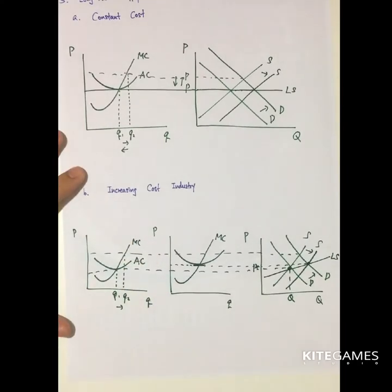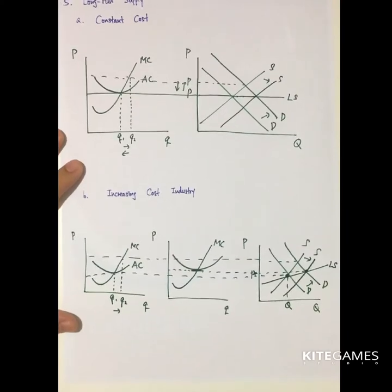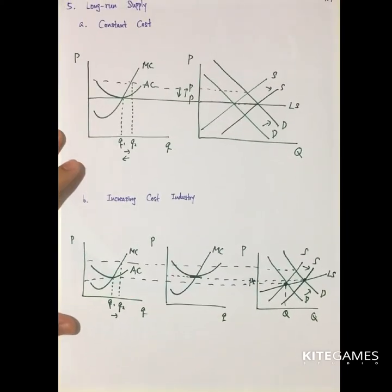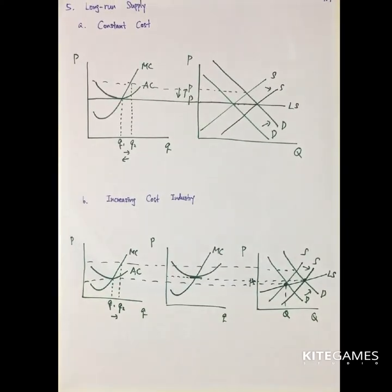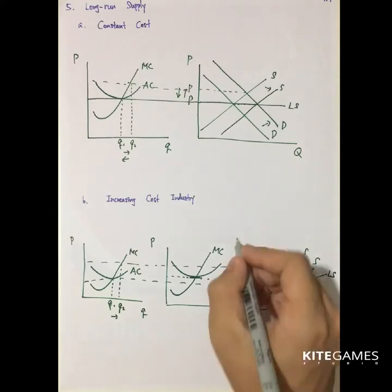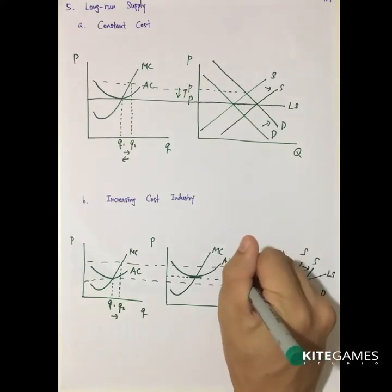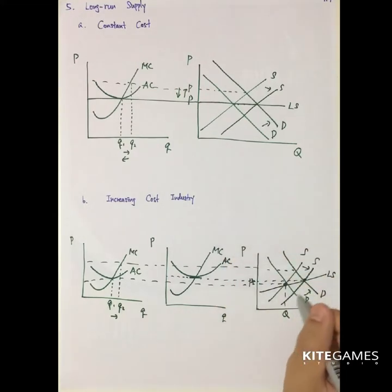For example, when newcomers arrive, they will push up the input price. As a result, the average cost of the industry increases, and the long-run supply curve is upward sloping.